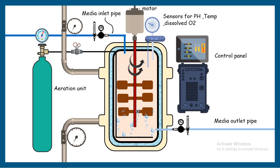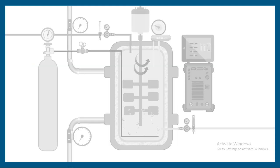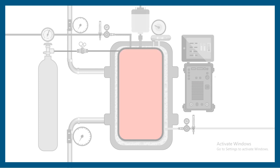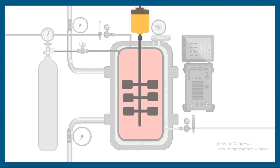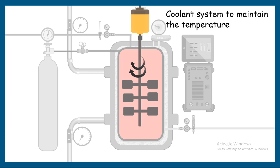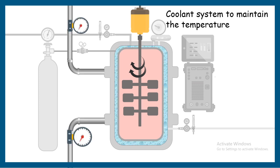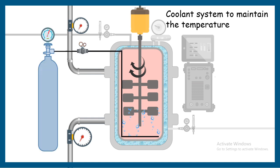The bioreactor has many components. First, there is the tank where the broth stays — it is sterile to ensure only the desired microbe grows and not random contaminants. There is also a stirring paddle attached to a DC motor, with controllable speed. Since stirring generates heat, there are coolant systems running around the broth tank to maintain the required temperature.